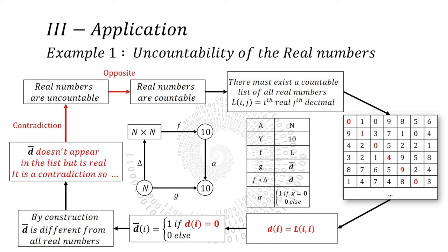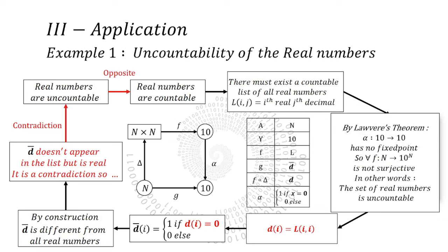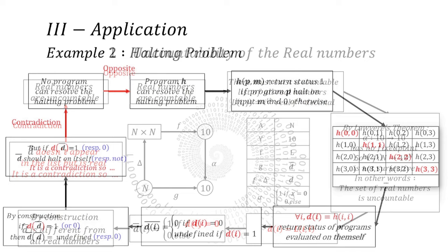D is a composition of F and delta, and alpha is a non-fixed point function. From these elements, we can unfold the proof of Lawvere's theorem and say that no F can be surjective between N and 10 to the power of N. In other words, the set of real numbers is uncountable.